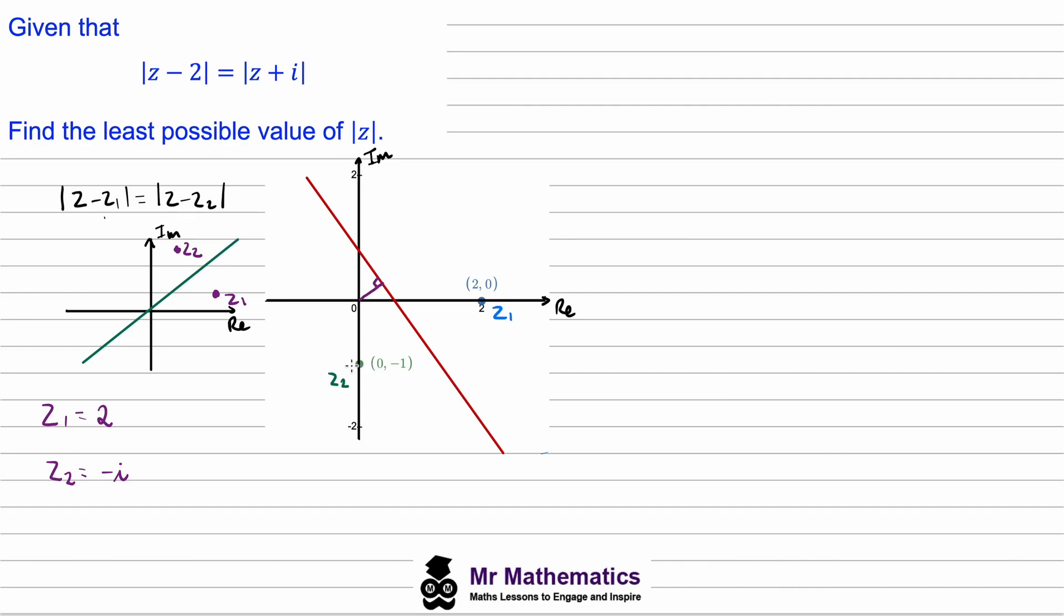We also know that this will have a gradient parallel to the gradient between z1 and z2 because they are both at right angles to the red line. We can work out the gradient of this purple line as the change in y divided by the change in x. The change in y is positive 1 and the change in x is 2, so the gradient of this line is 1/2.